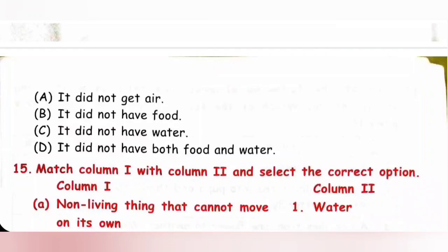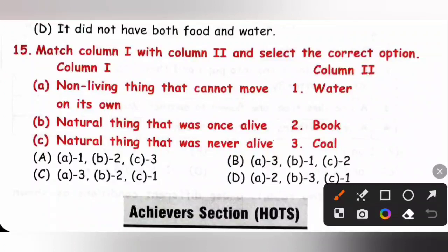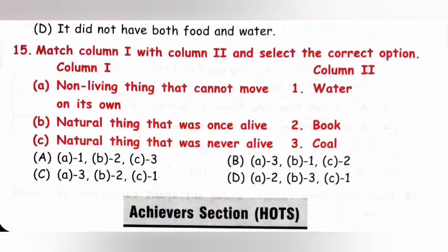Question 15: Match column 1 with column 2. A — non-living things that cannot move on their own. B — natural thing that was once alive. C — natural thing that was never alive. C matches 1, B matches 3 — coal is a non-living thing but made from living things. A matches 2. So A-2, B-3, C-1. Option D is the correct answer.